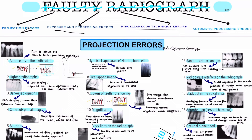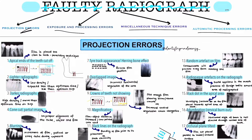This particular part is all about projection errors, and at the end I am going to show you actual IOPAs to see how the errors look on them. First, we should know the three major parameters when taking x-rays: kilovoltage peak (kVp), milliamperes (mA), and time measured in seconds. Most of the time kVp and mA are fixed, and the variable is time, which depends on the thickness and density of the object.